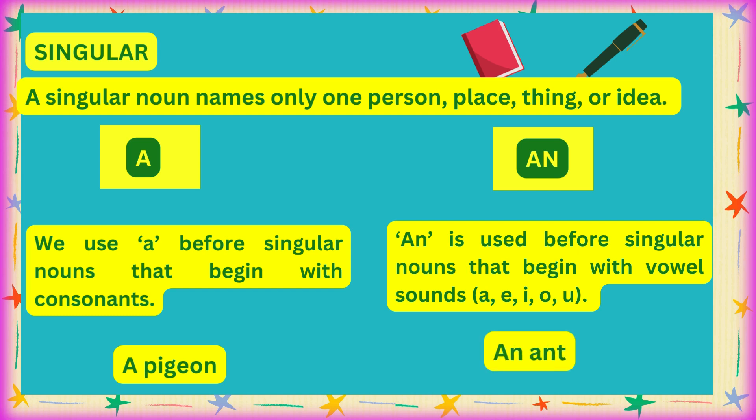For example, 'ant' starts with A, so we say AN ant, not A ant. Another example: 'orange' starts with O — O, R, A, N, G, E. The first letter is O, which is a vowel, so we say AN orange, not A orange. I hope it is clear when to use A and when to use AN.